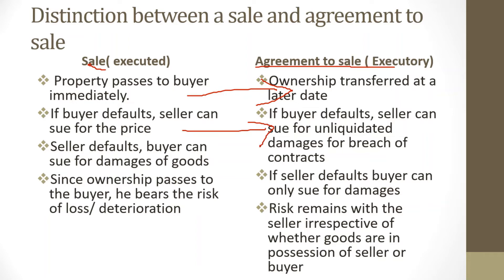Another distinction: under a sale, if a buyer defaults the seller can sue for price, because the seller has already provided consideration. Under an agreement to sell, you can only sue for unliquidated damages, because you do not know exactly what loss the seller has suffered — you are still in the process of agreeing to the sale.